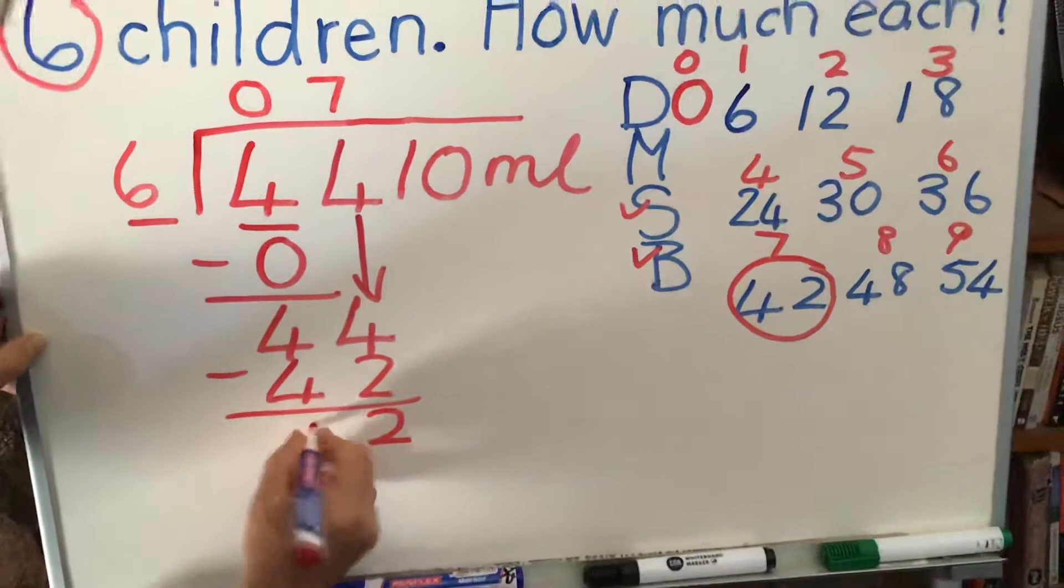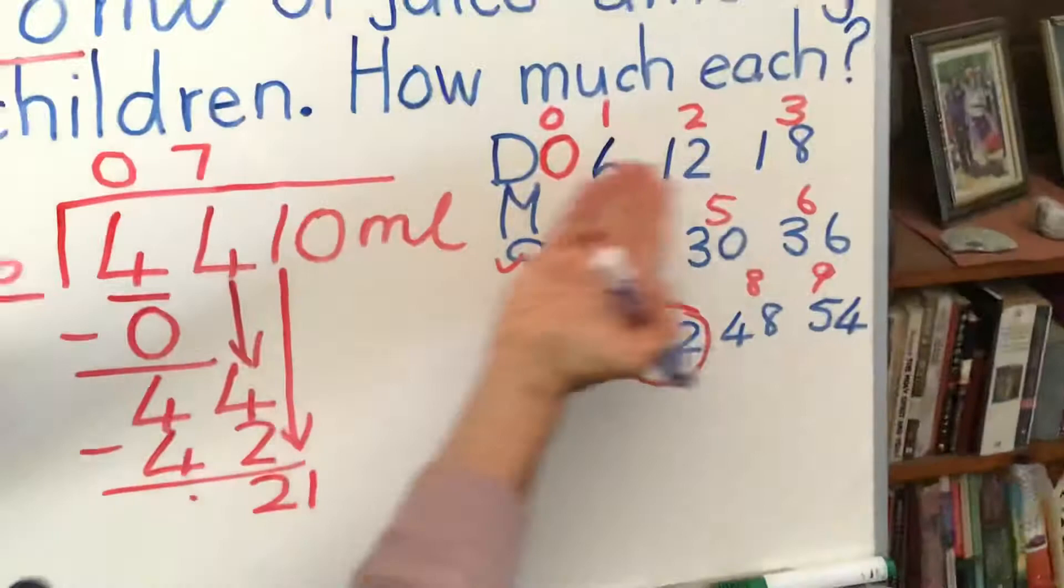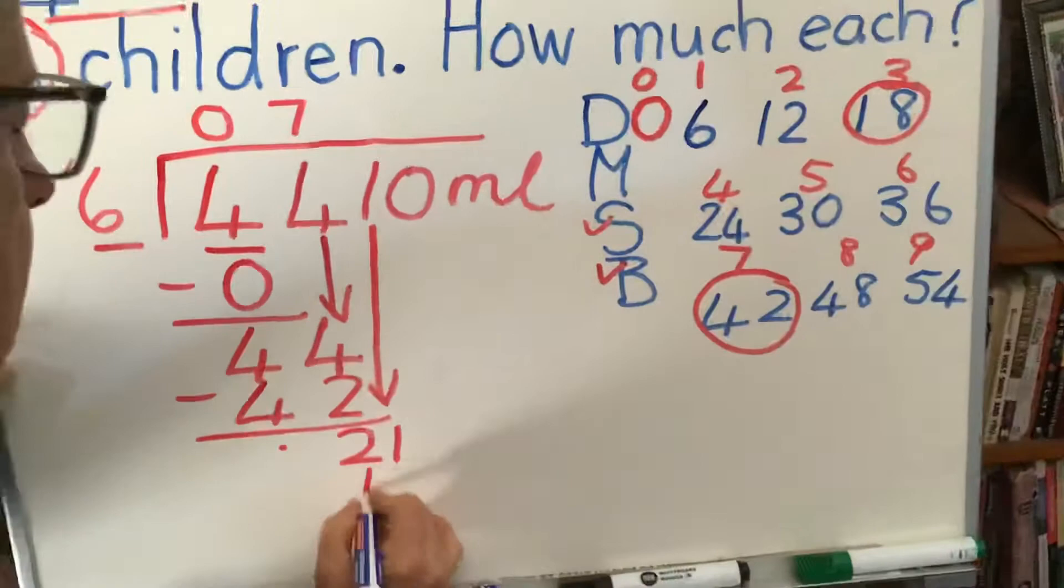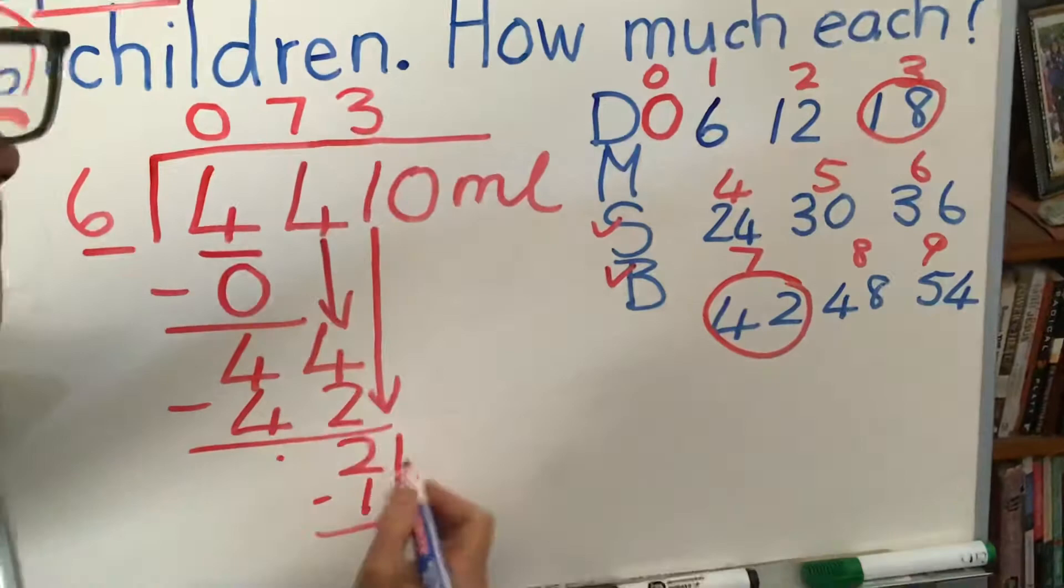Then we have to bring down. Next number is 1. Let's look for 21 here. Can we find it? 24 is too big. It has to be 18. So we put down our 18. And we're going to put our 3 at the top, remember above the 1 there.